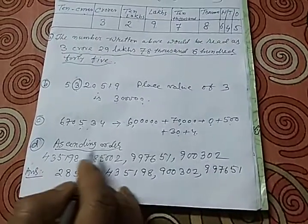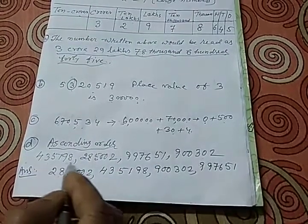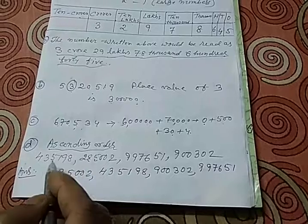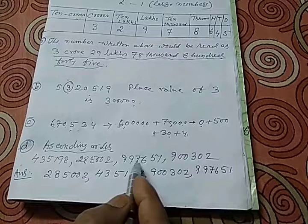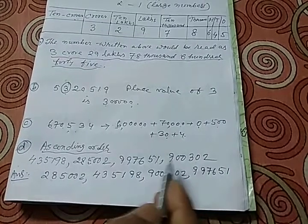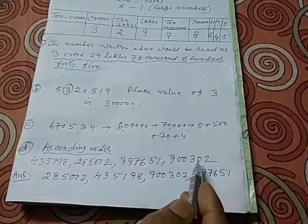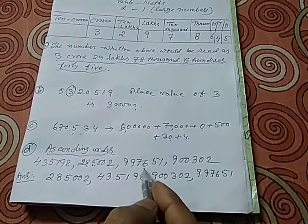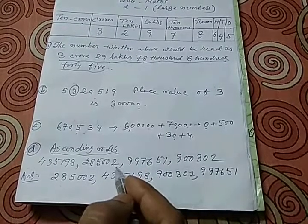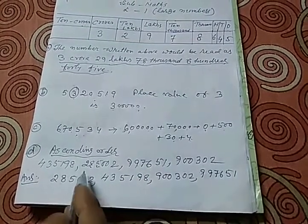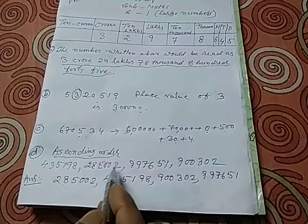Now, come to how to write the number in ascending order or descending order. There is a series of numbers like this: 435198, 285002, 997651, 900302. These are the numbers given to you. You have to find out, you all know, the ascending order means you have to write the number from smaller to greatest number. So in this case, we have to find out the smallest number. We see that the smallest number in this case, in this series, is 285002.